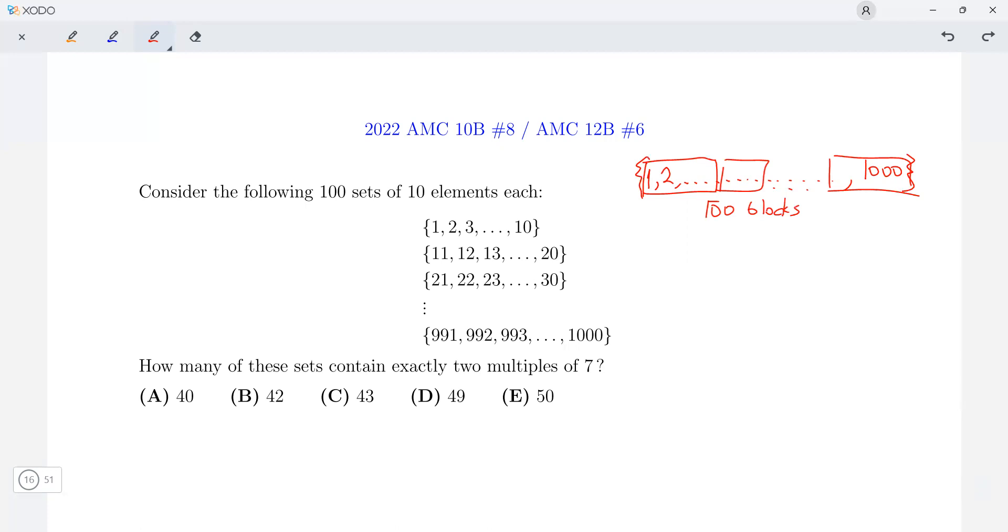And each of these blocks contain either one or two multiples of 7. So each has one or two multiples of 7, and that's because we have a group of 10 consecutive numbers.